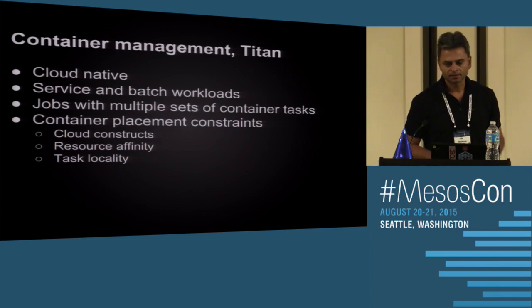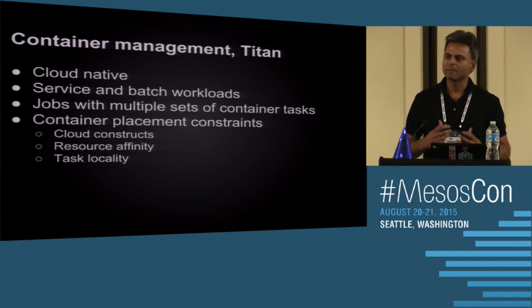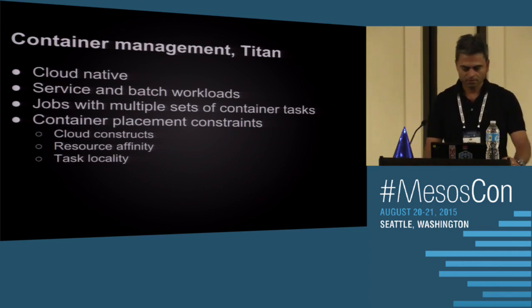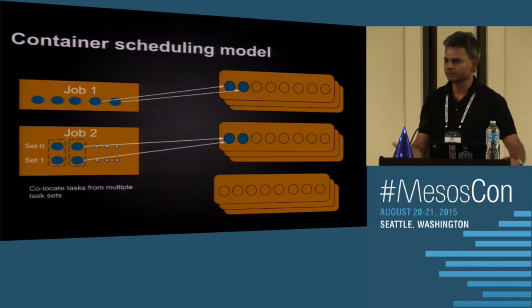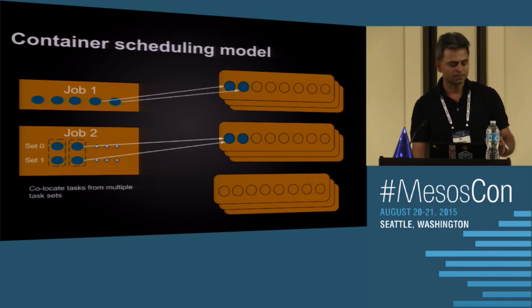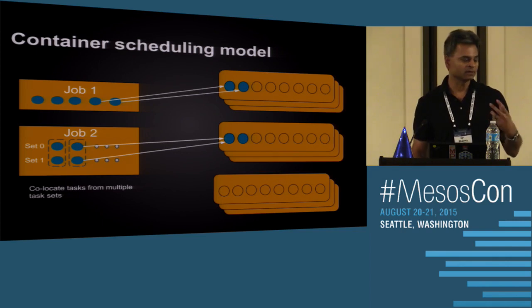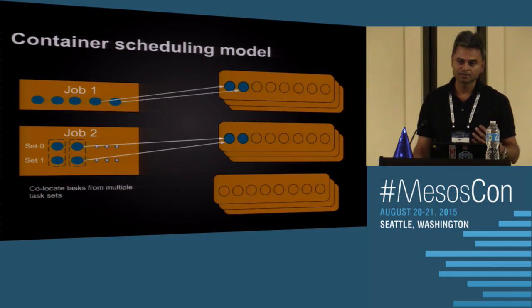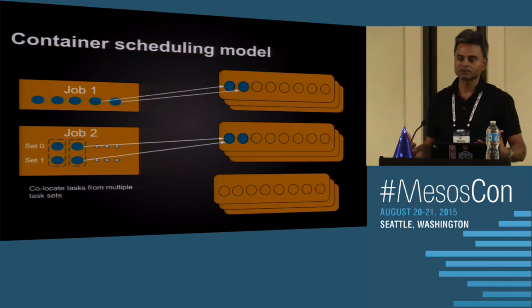For container management, we run the usual services but also batch applications using containers. A job can have multiple sets of containers. Sometimes we have jobs with multiple task sets and constraints across them — for example, a task from set zero and a task from set one must run together on the same host. This is the sidecar pattern: two different co-located tasks with resource isolation between them.